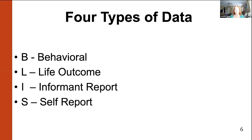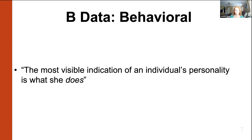Informant report is friends, teachers, or parents telling about the person you're interested in. If we're wanting to get information about another person, we can call that person the target. You can talk about having an informant report about the target person. The last form of data is self-report — asking the person questions in an interview format or having them fill out a questionnaire, either online or paper and pencil.